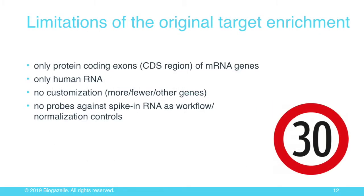There were still limitations to the original target enrichment workflow. Only protein-coding exons of messenger RNAs were enriched in the original implementation. Only human RNA was enriched. There was no room for customization — we couldn't easily add or remove genes. Most importantly, there were no probes against spike-in controls, which are crucial for workflow quality control and normalization, especially in the field of liquid biopsies.